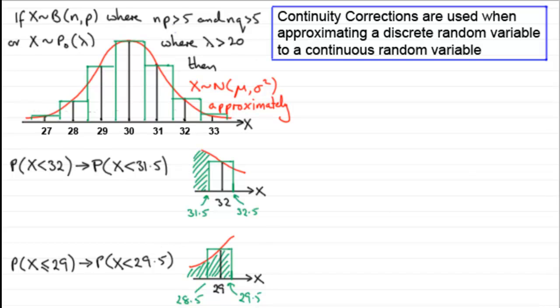Now, this again isn't the only things that we can have. Because what we can have is the probability of X, for instance, being greater than a particular value. Let's say 28. I wonder if you could think what the continuity correction would be for this. I'll just give you a moment to pause the video, have a go and see what you think.